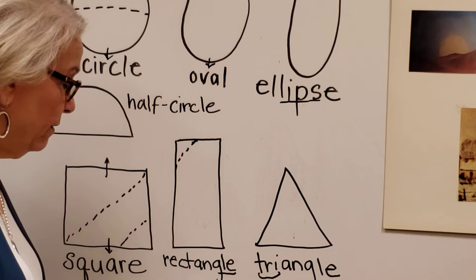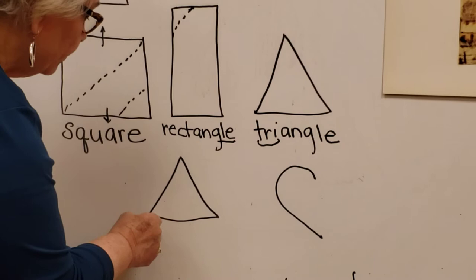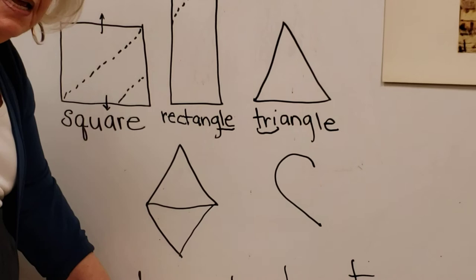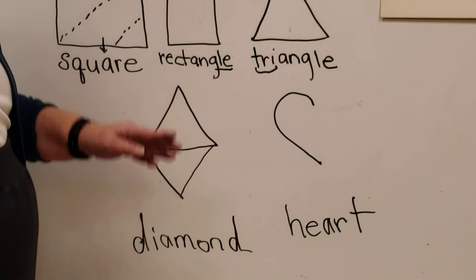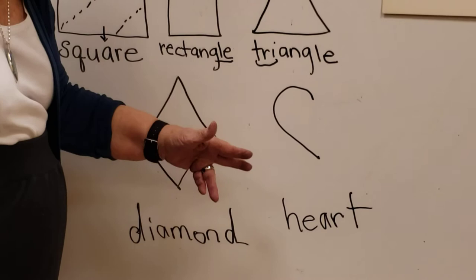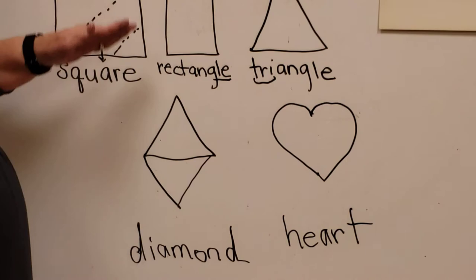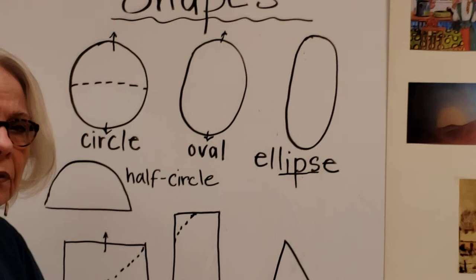So if you draw a triangle and add another triangle on the bottom of it, you're going to have something called a diamond shape, and we use that a lot in our artwork as well. So we have round shapes and shapes that have corners. We also use the heart shape a lot — it's rounded on the top and has an angle on the bottom.